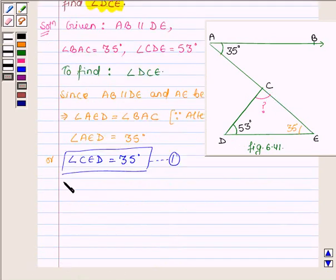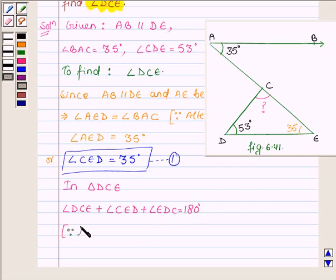In triangle DCE, sum of three angles, angle DCE plus angle CED plus angle EDC is equal to 180 degrees. Since in a triangle, sum of three angles is equal to 180 degrees.